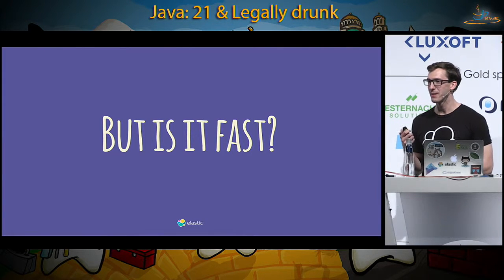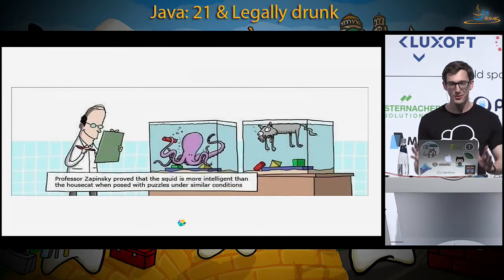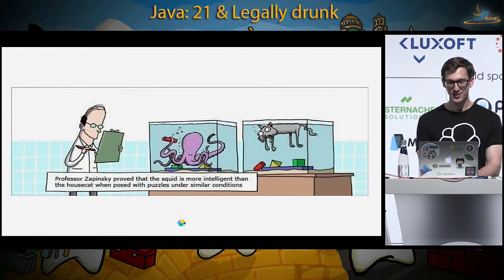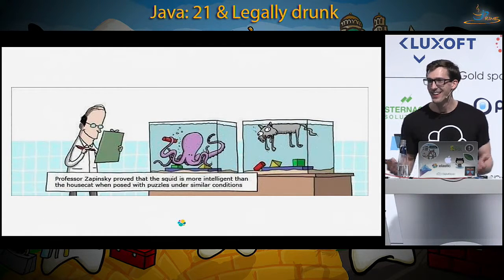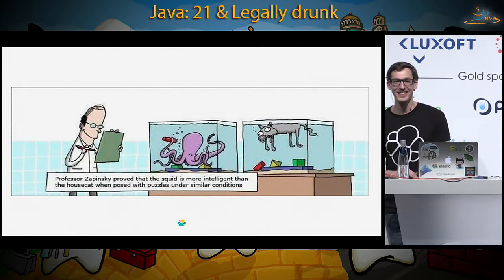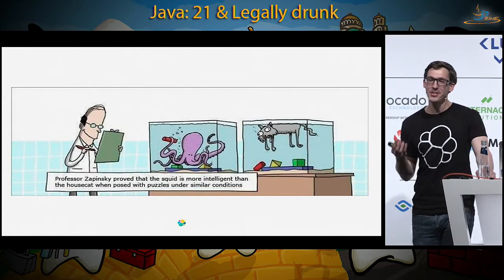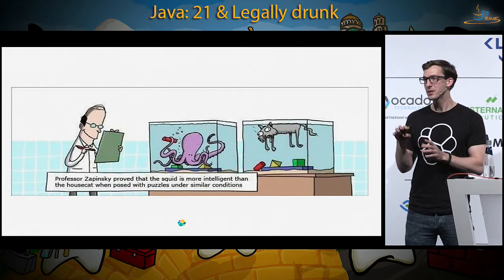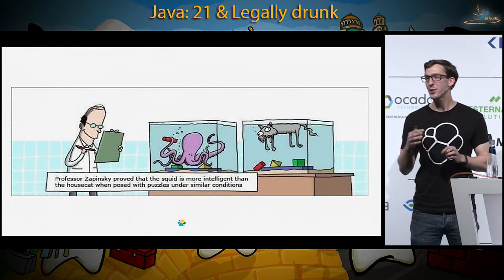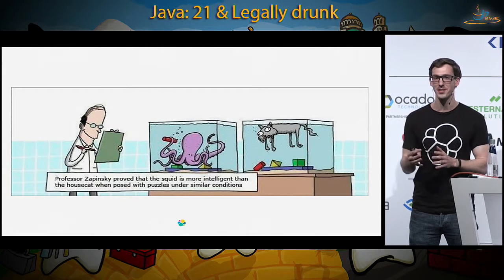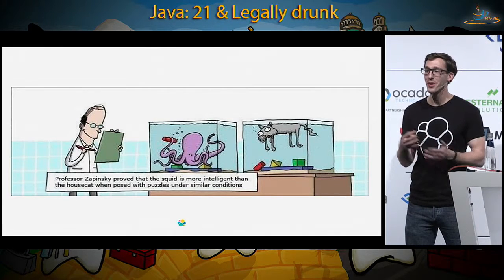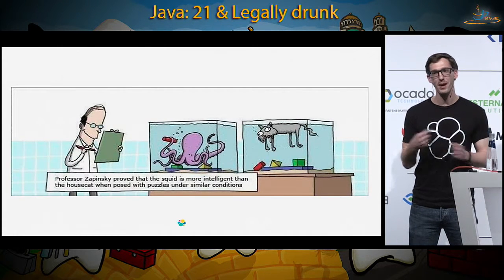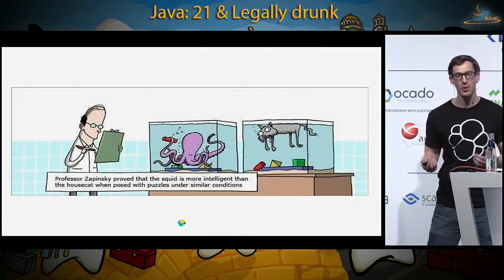People often ask if a specific system is fast. There's a great comic: Professor Zipkinski is testing whether a house cat is more intelligent than a squid under similar conditions — these comparisons don't always make sense. MongoDB, Cassandra, and Couchbase each did benchmarks with their two competitors, and each managed to find one scenario where they were at least twice as fast as their competitors — but each found a different scenario. Whatever benchmarks are out there, forget them. The only thing you can guarantee is that your benchmarks will be different from mine. Unfortunately, there's no way around it: you need to benchmark for yourself.